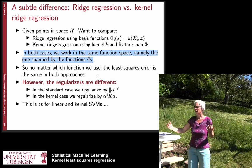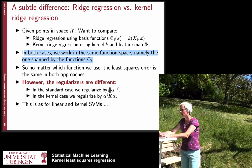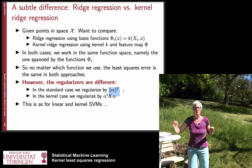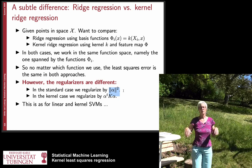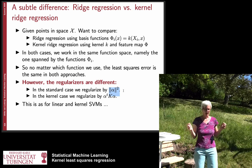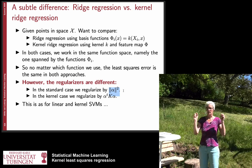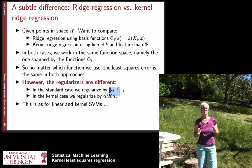But the regularizer looks a bit different. In the standard case we regularize by the two norm of the coefficients. This is how we derived it in the first place we said we have this feature expression but our regularization simply is the two norm of the original coefficients.